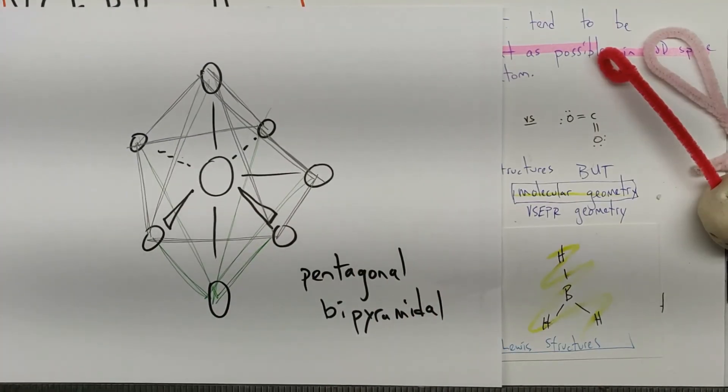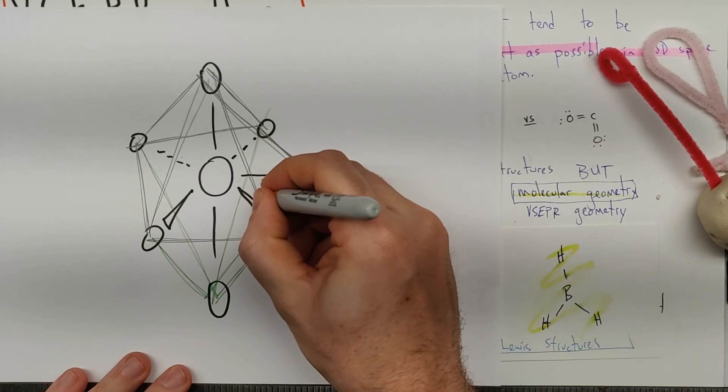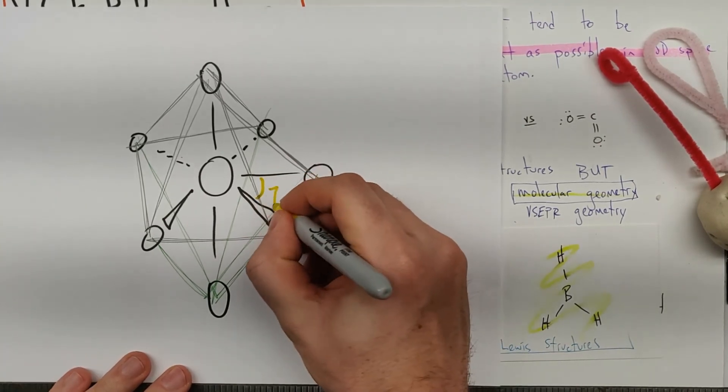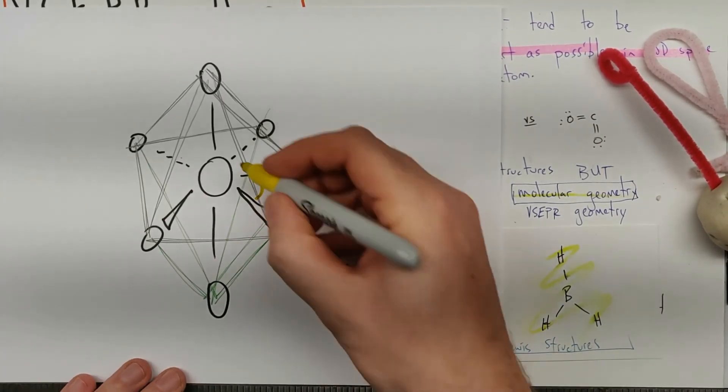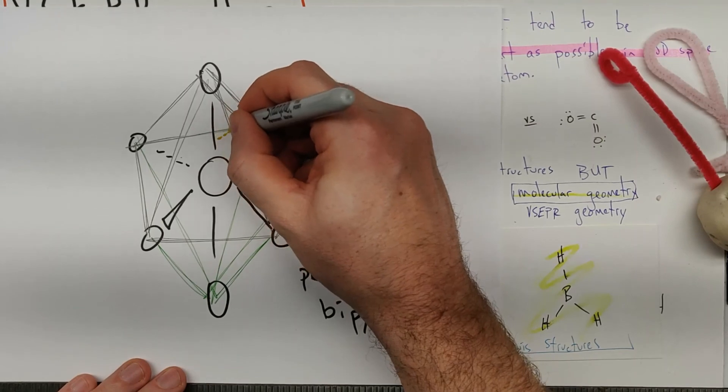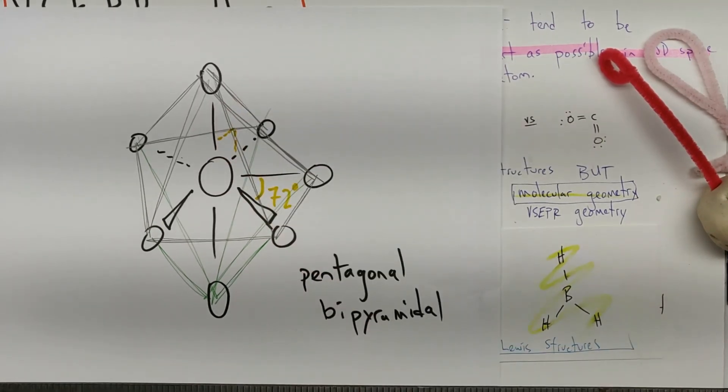Our bond angles as we look at it, and it's certainly not worth memorizing, but this right here, we would have 72 degrees. And then we've got, for these things, 90 degrees. And 180 if you were counting top to bottom.